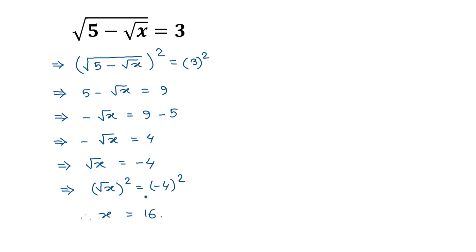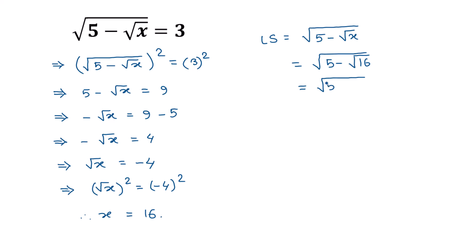Now let's verify this solution. Substitute x equals 16 into the left side. The left side is square root of (5 minus square root of x) equals square root of (5 minus square root of 16). Square root of 16 is 4, so this becomes square root of (5 minus 4), which is square root of 1, and that equals 1.